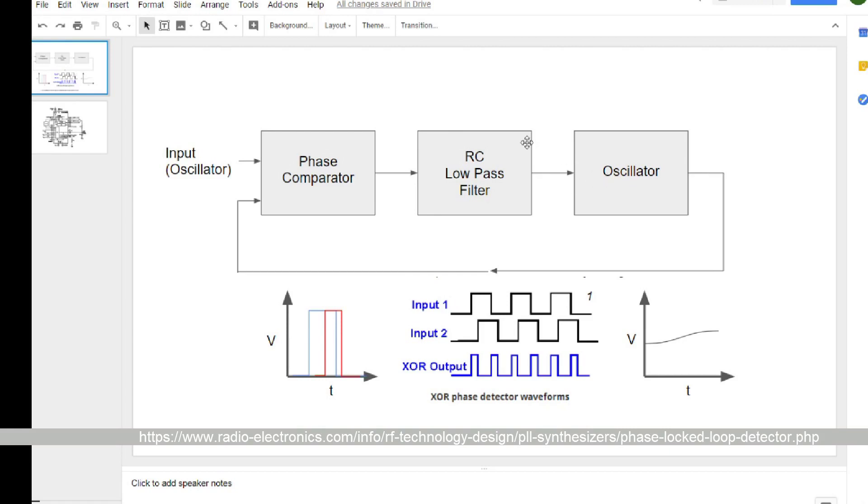And the job, the main point of this circuit, is to make this oscillator oscillate at the same frequency as the input oscillator. So it takes one signal and outputs another signal at the same frequency, or possibly a different one.